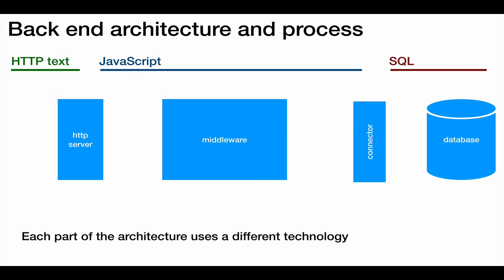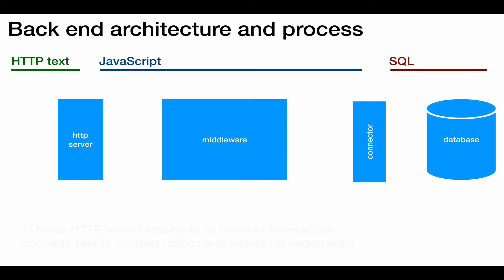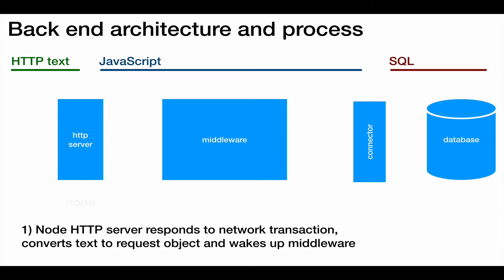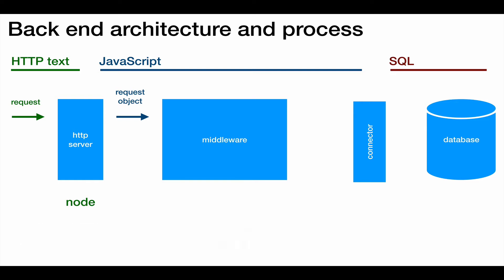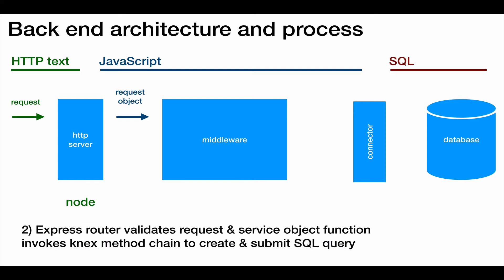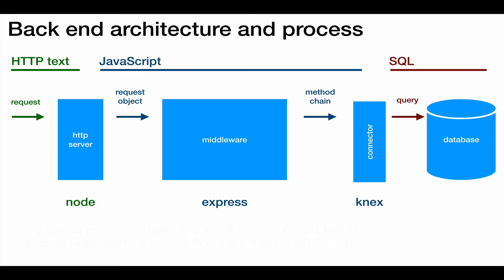Here's the process. When a network transaction comes in, Node converts it into a JavaScript request object and wakes up the middleware. The middleware's ExpressRouter validates the request and then invokes a service object function. The function uses a method chain in Connects to create and submit an SQL query to the database.